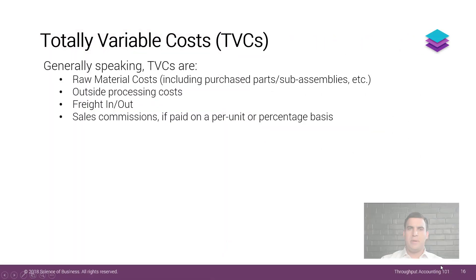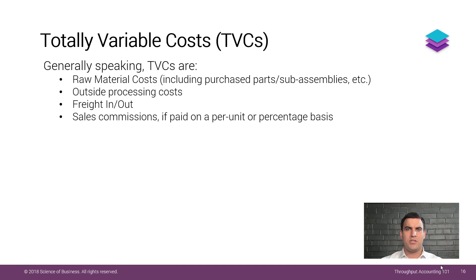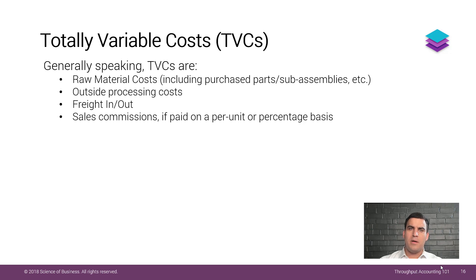Generally speaking, totally variable costs or TVCs are raw material costs including purchased parts, sub-assemblies, etc. Outside processing costs such as painting, finishing, or any type of plating that might be done, or something like non-destructive testing. Additionally, freight in or out and sales commissions that are paid on a per unit or percentage basis are included as well.